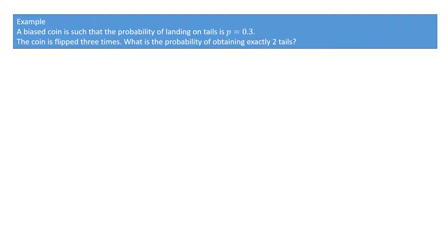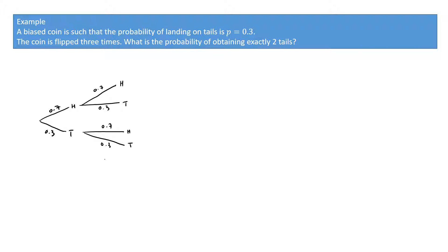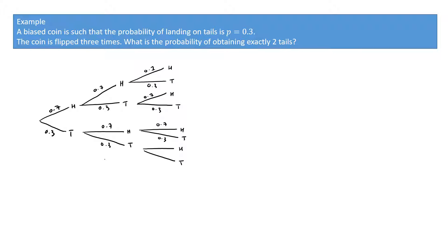On the first flip we'd either get heads or tails. Since this coin is biased, the probability of heads is 0.7 and tails is 0.3. On the second flip, we'd again get heads or tails with the same probabilities, 0.7 and 0.3, and the same on the third flip — heads or tails with probabilities 0.7 and 0.3.